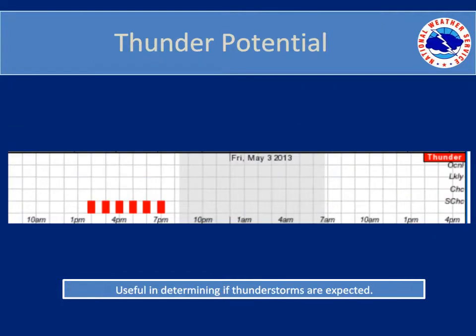The chance of precipitation does not take into account whether showers and thunderstorms are expected or just showers. The fourth part of the hourly weather graph shows the thunder potential. In this case, there is a slight chance of thunderstorms from around 2pm to 7pm on Thursday. Even though there is a chance of precipitation on Friday, thunderstorms are not expected with the precipitation.